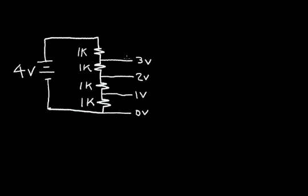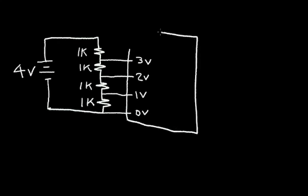We can do some interesting things with these voltages. For example, we can create a circuit — I'll draw a box to represent it — that has two inputs, which we'll call input A and input B, and one output. This output will be either zero volts, one volt, two volts, or three volts.